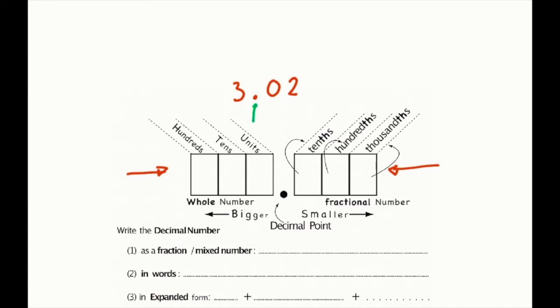But before doing so, I write units on the left of the decimal point and tenths on the first column on the right. Of course, the second column on the right of the decimal point is hundredth. Okay, now we are ready to fill in the appropriate columns.